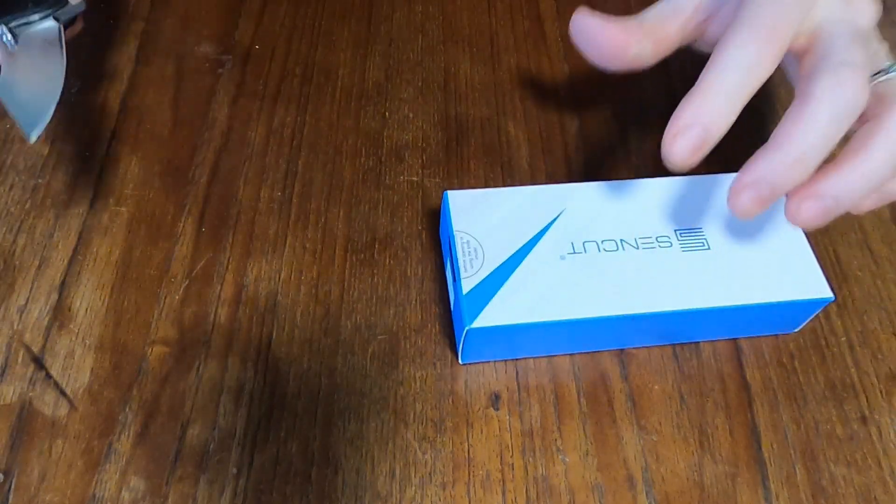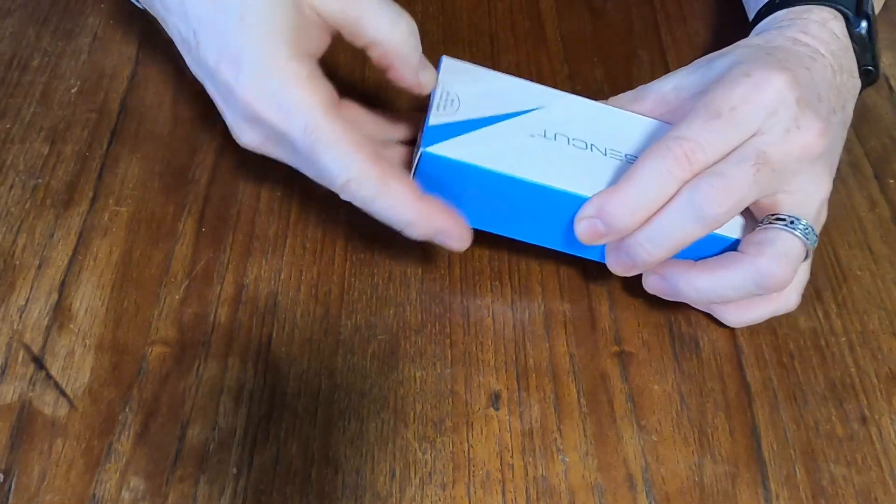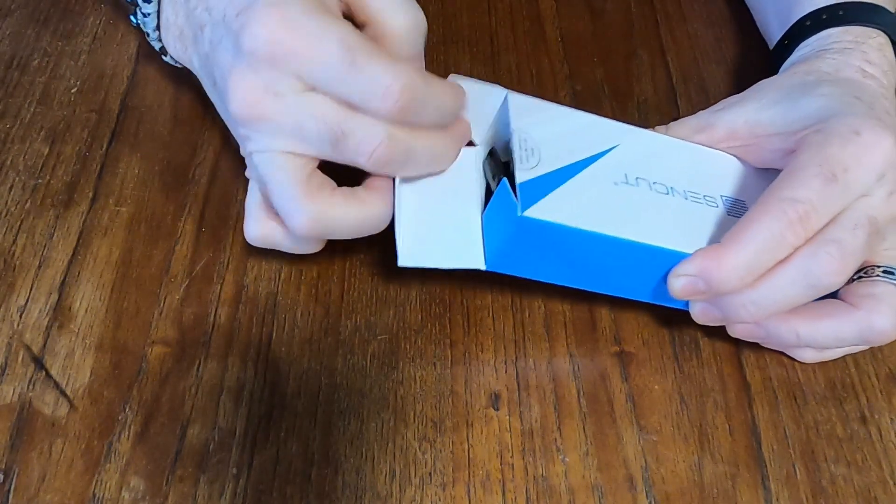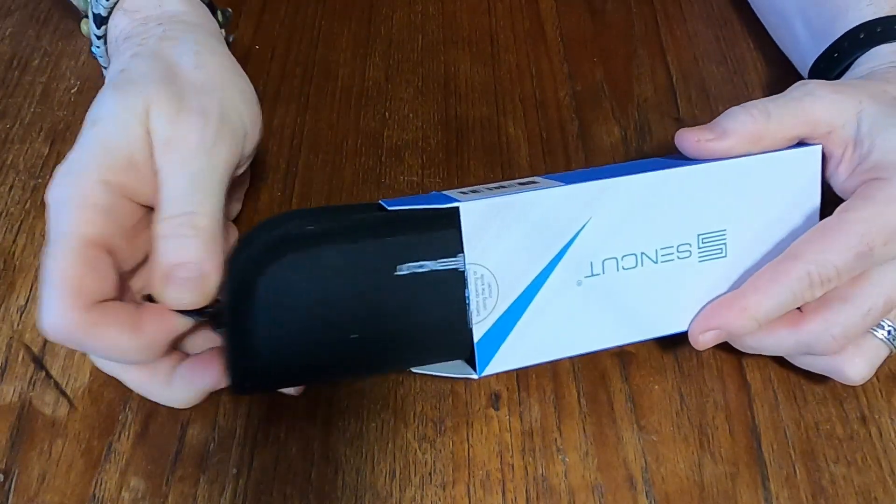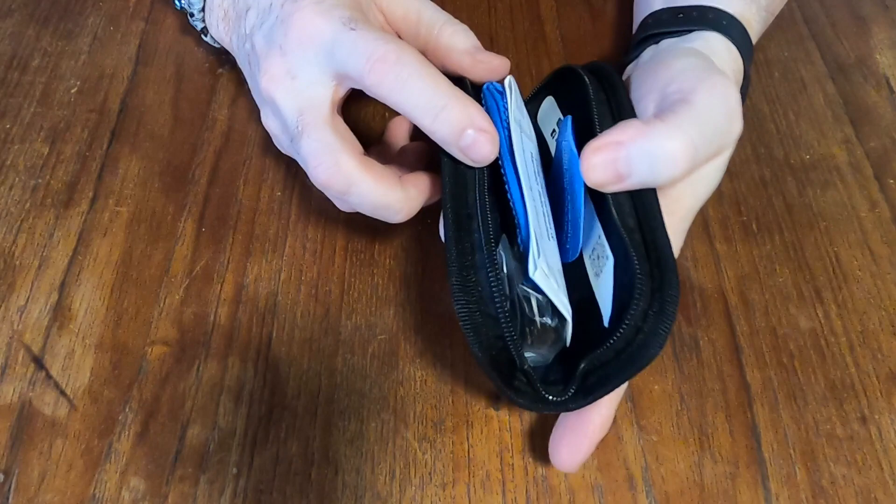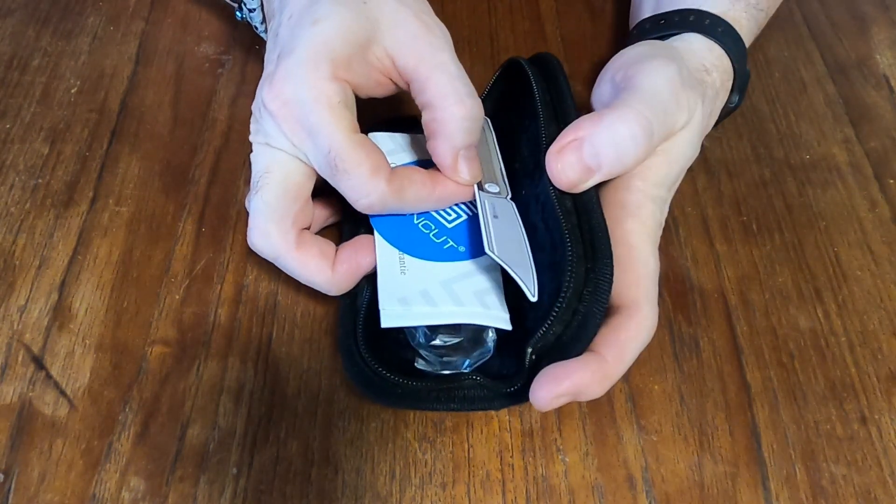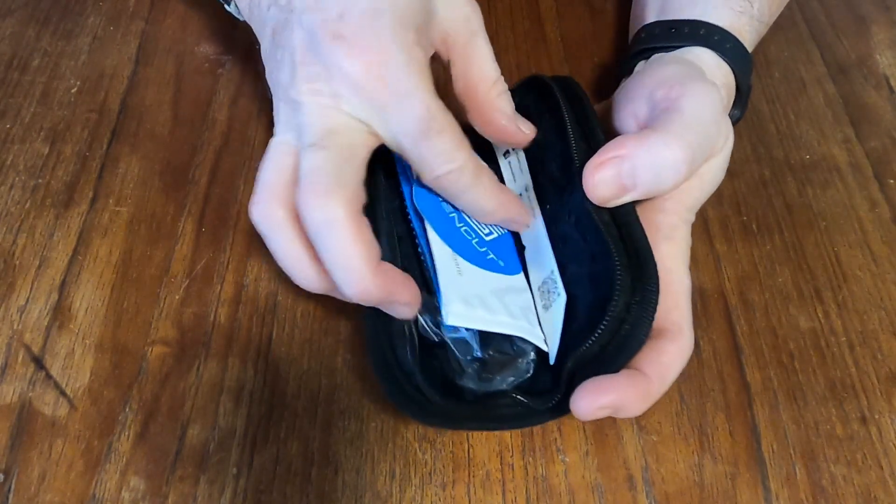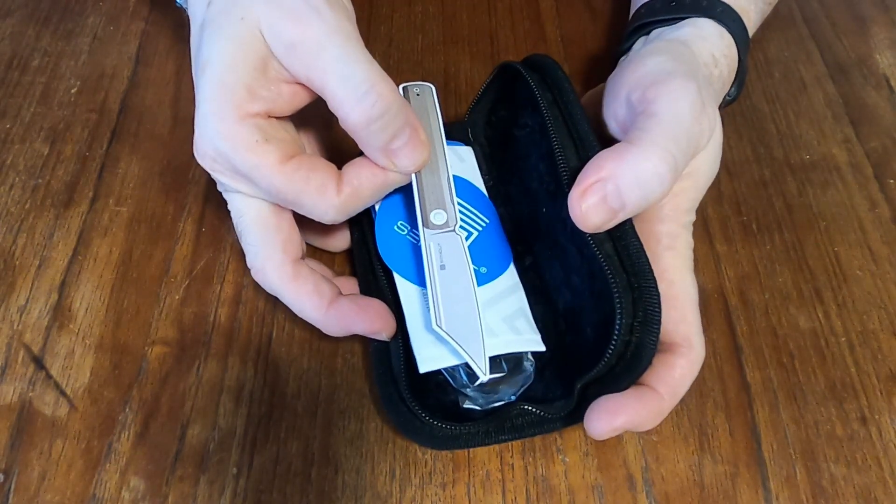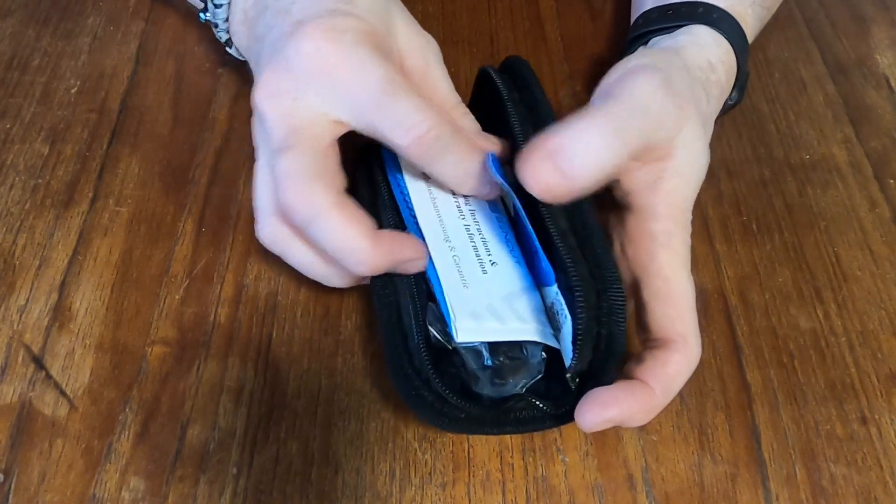Open up the box and this one is the Sencut Watuga. And for those of you who aren't familiar with Sencut, it is part of the Civivi lineup. It is their budget. Oh, I finally got a different sticker. Usually you get the Elementum. So now I've got a Sencut.